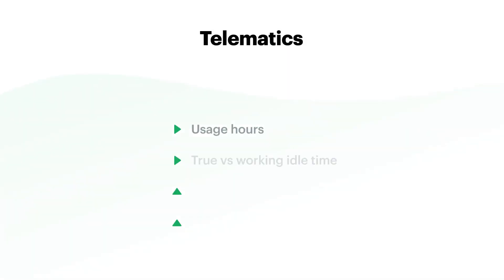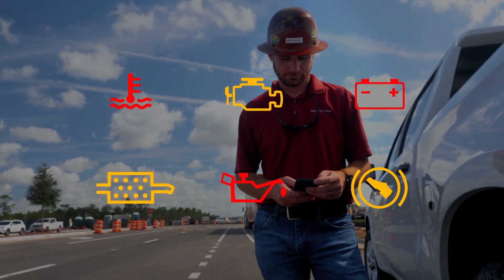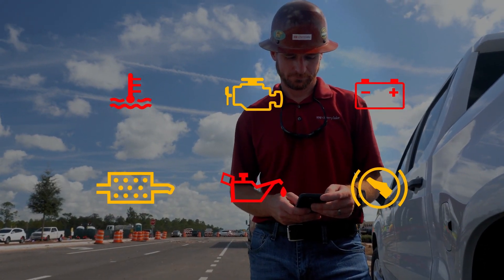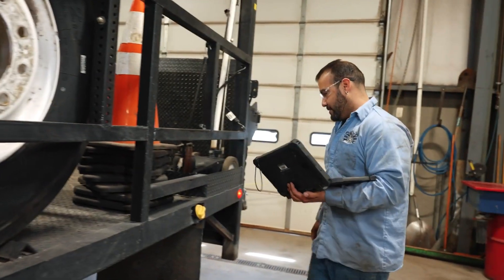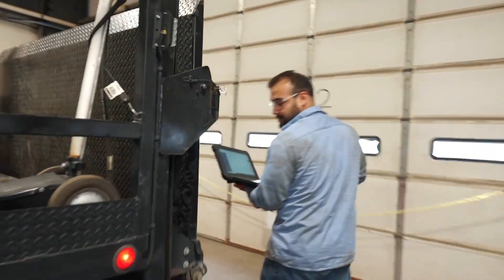Telematics can automatically track things like usage hours, true versus working idle time, fuel consumption, and diagnostic trouble codes. DTCs in particular can be a wealth of information to supplement inspections, since they often indicate things that drivers can't see on a simple once-over of an asset.